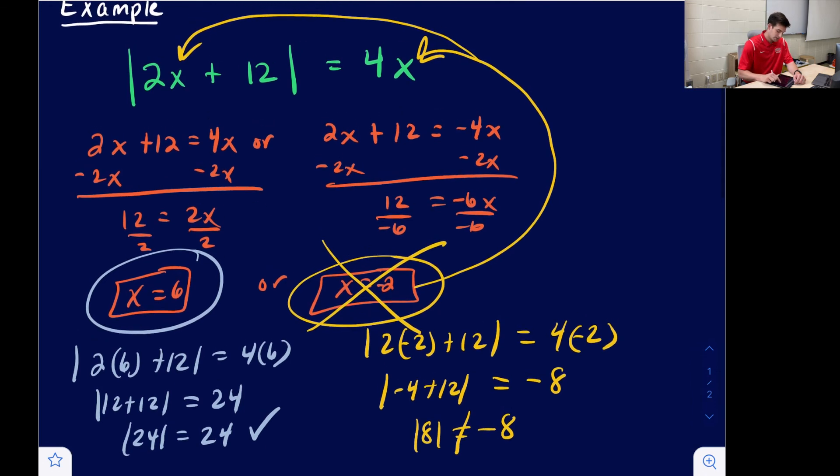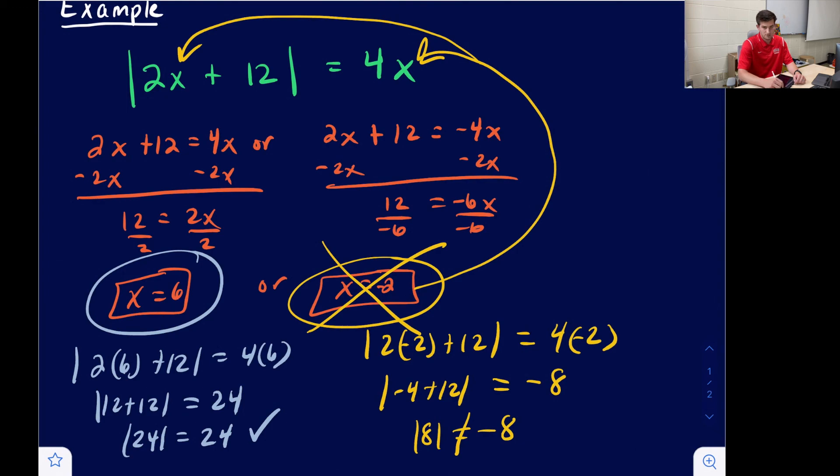So for this absolute value, there's only one solution, and that solution is x equals 6. And that's what an extraneous solution is.